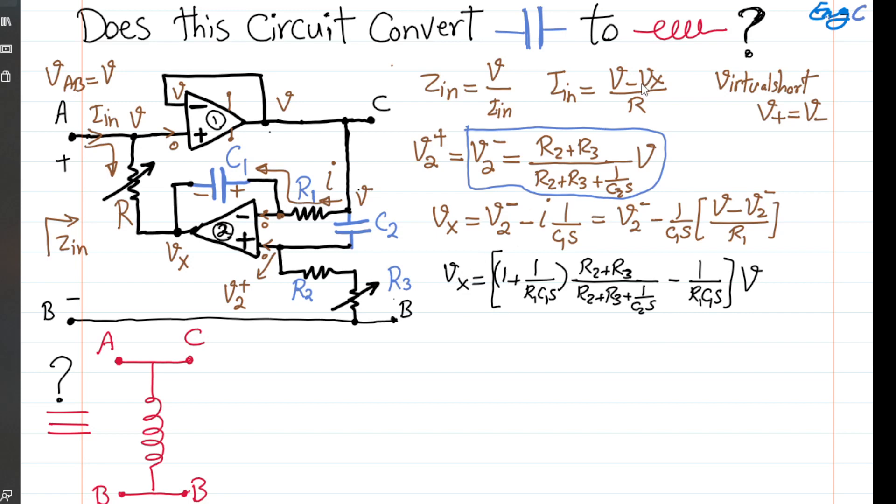All I need is I can compute my Iin. So, my Iin is equal to one over R times V minus Vx. So, V minus what you see here. And as a result, I can just say one plus one over R1C1S minus one plus one over R1C1S times R2 plus R3 divided by R2 plus R3 plus one over C2S and this whole thing multiplied by V.